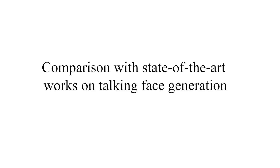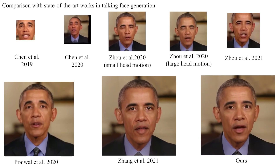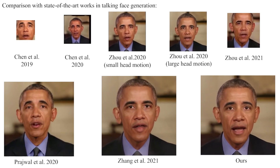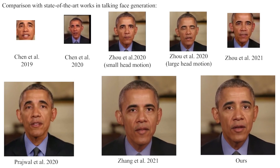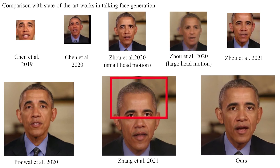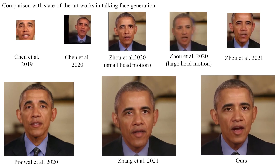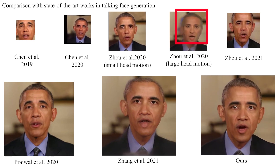We compare our method with state-of-the-art works on talking face generation. Methods like Jong generate artifacts in large head motions. The main reason is that their prior assumption of dense flow becomes unreliable under large head movements. Other methods neglect the problem of misaligned image mapping, so their framework synthesizes blurry results under large head motions.